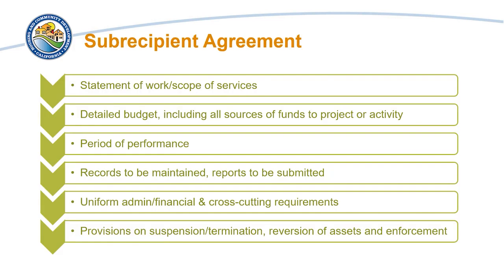Subrecipient agreements must include the following: a statement of work or scope of services; a detailed budget, including all sources of funds allocated to a project or activity; the period of performance; the records to be maintained and reports to be submitted; the uniform administrative financial and cross-cutting requirements; and provisions on the suspension or termination of the agreement, as well as a reversion of assets and enforcement.